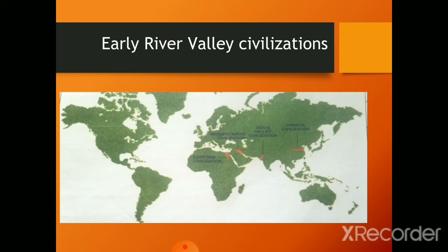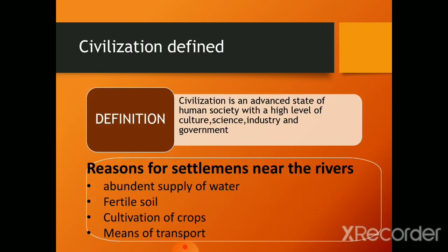Here arises a question: what is civilization? Civilization is an advanced state of human society with a high level of culture, science, industry, and government.